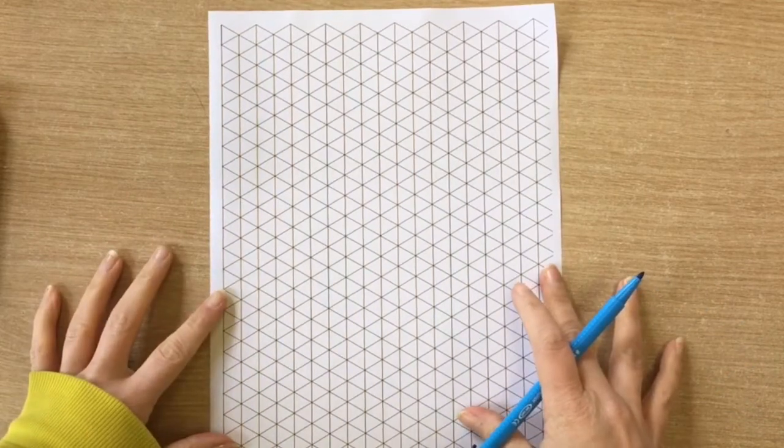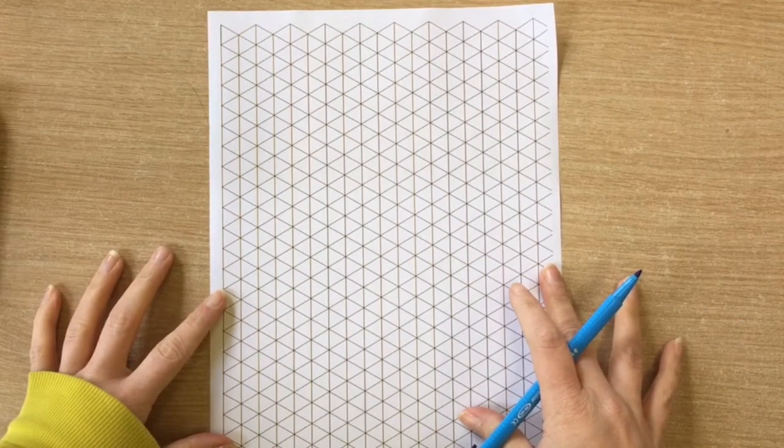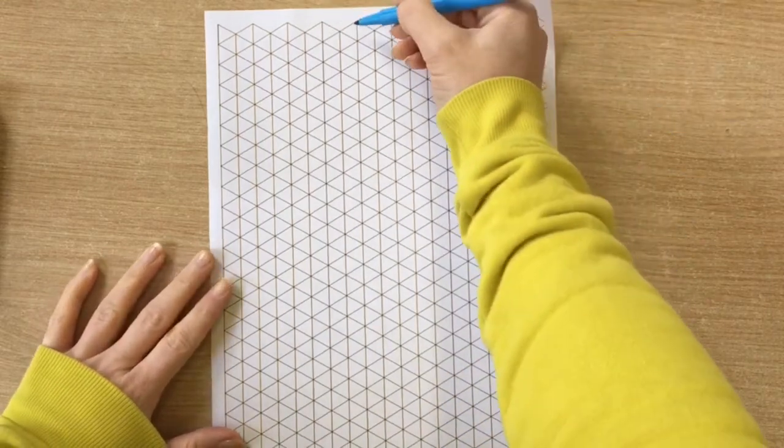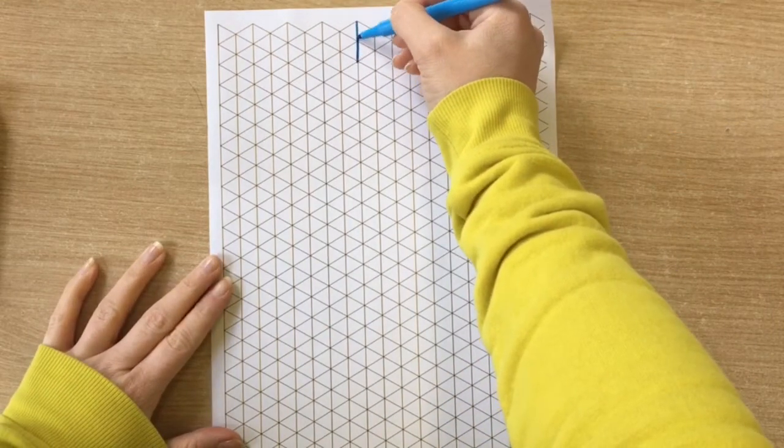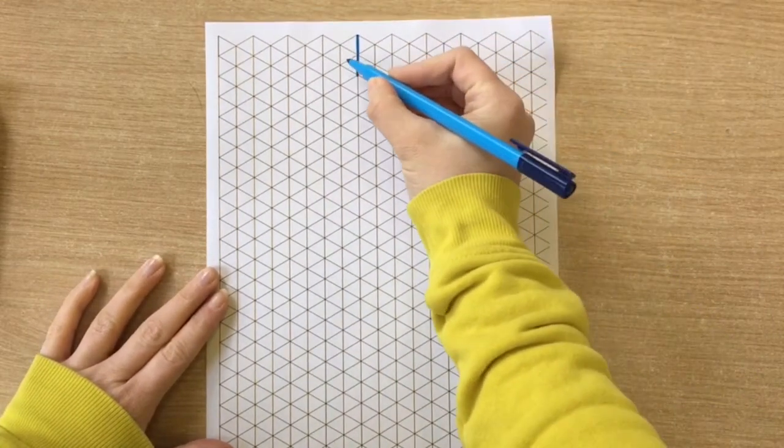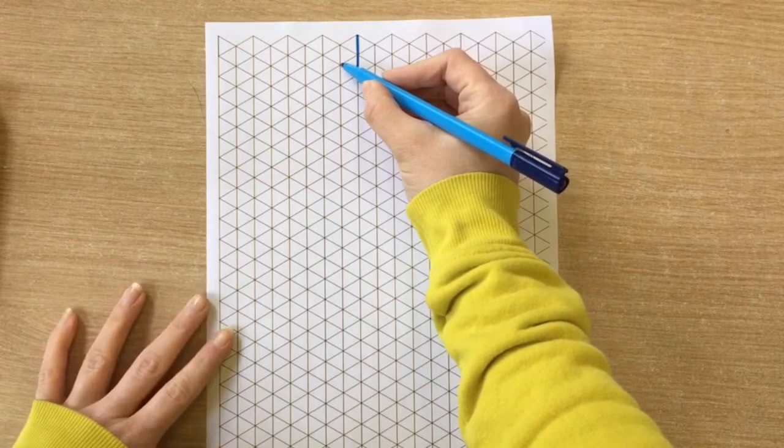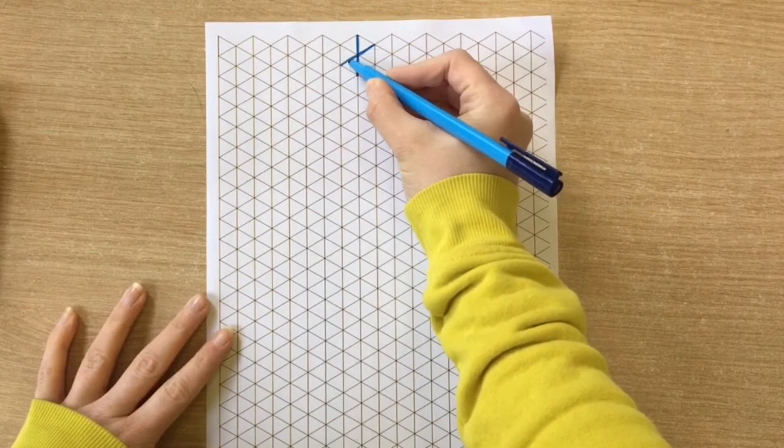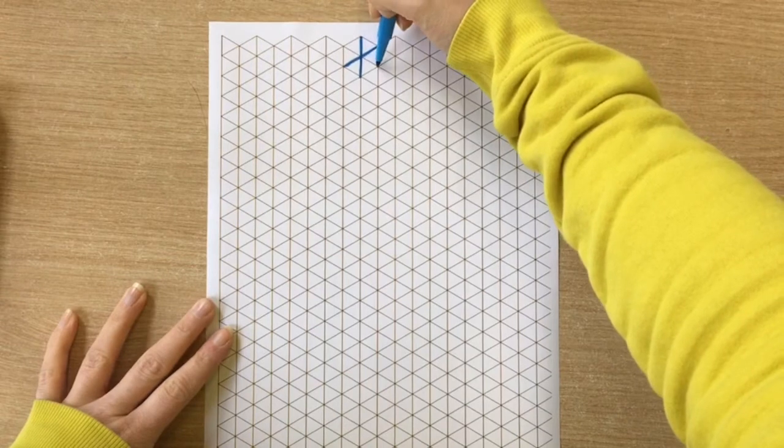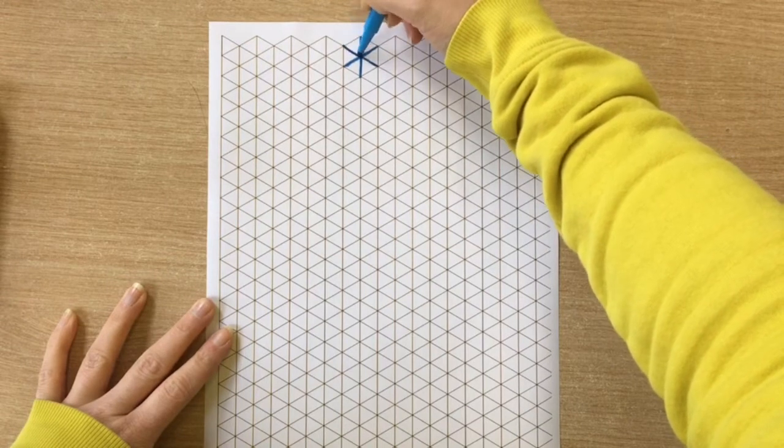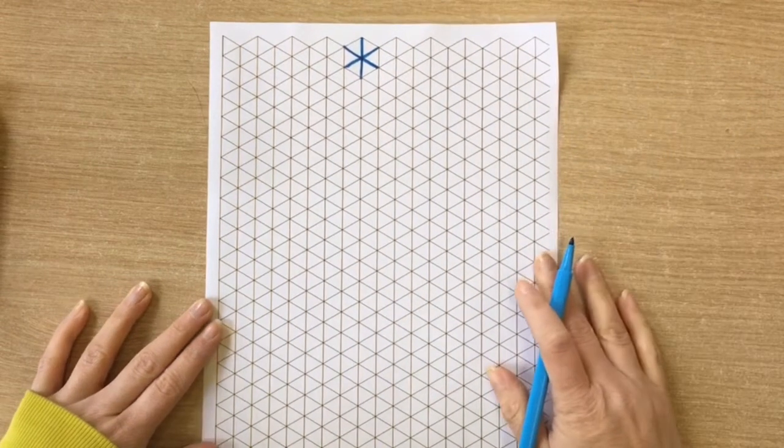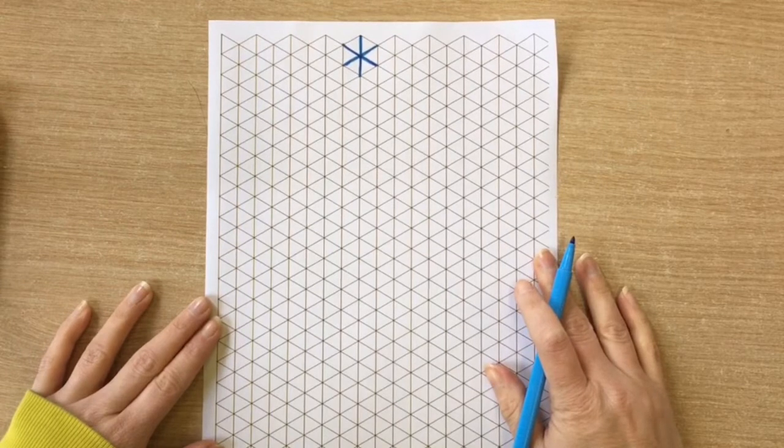So an isometric grid looks like this and you have three sets of lines. You've got vertical lines come straight down, you've got lines that go up from bottom left to the top right and then you've got another set of lines that go from the bottom right up to the top left and those are the only lines that you should be drawing when you draw in isometric.